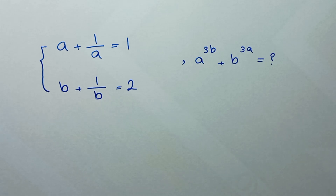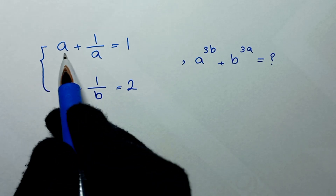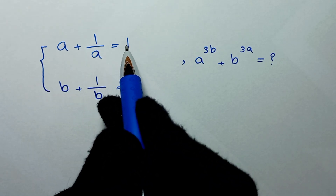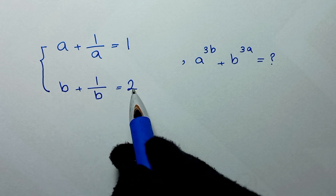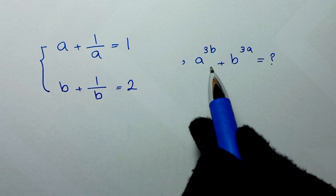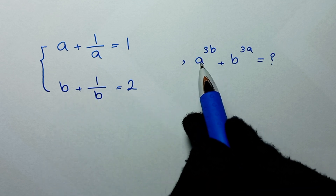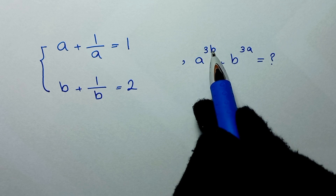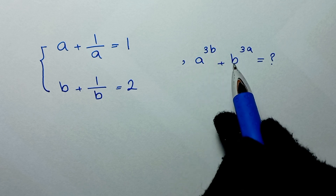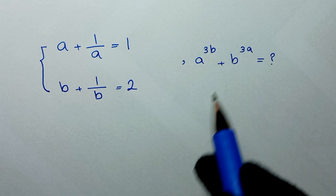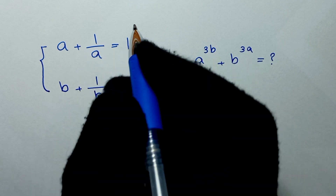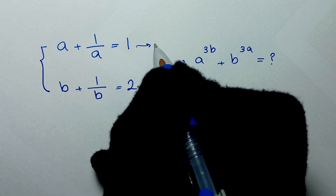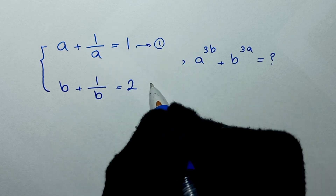Hello my friends, welcome to solve this math problem. We have a plus one over a is one, and b plus one over b is two. We need to find the value of a to the power of 3b plus b to the power of 3a. In the first step, we start by letting this as equation one and this as equation two.